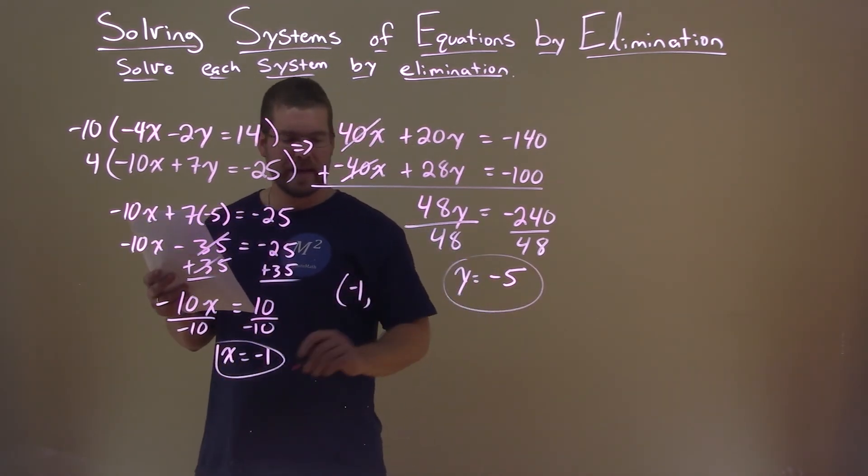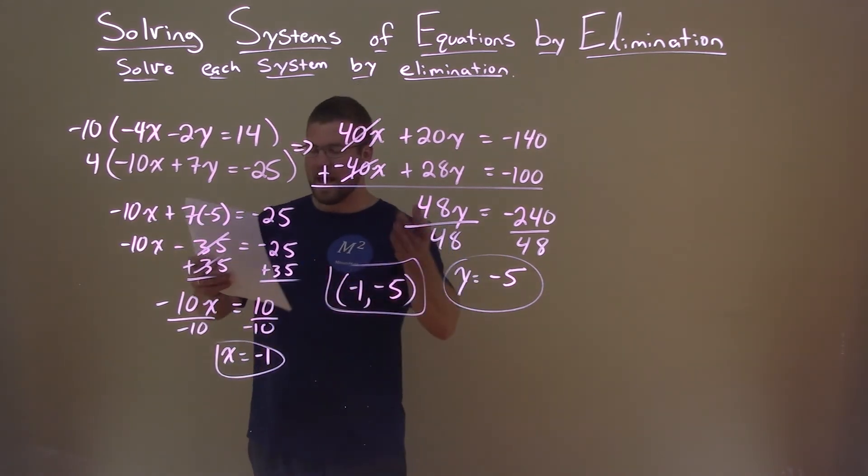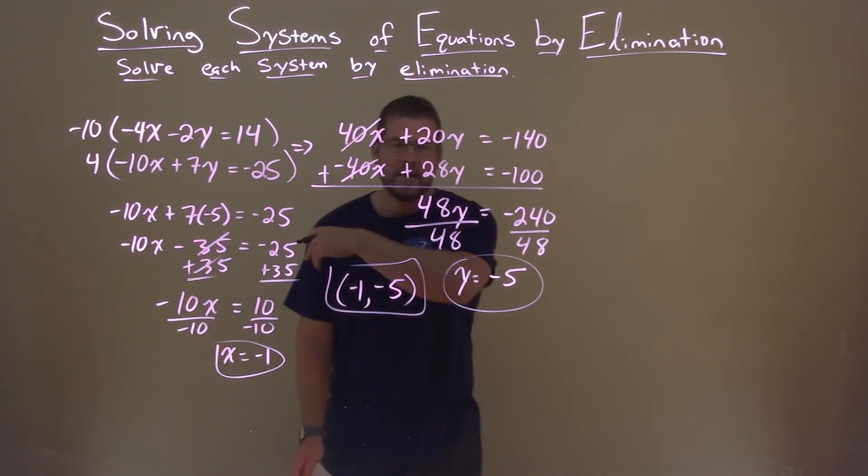Let's write that as a coordinate point. Negative 1, negative 5. Just double checking there. And there we have our final answer. Negative 1, negative 5.